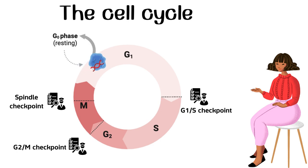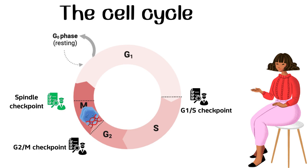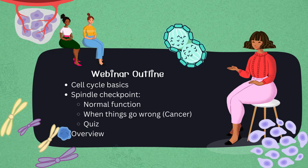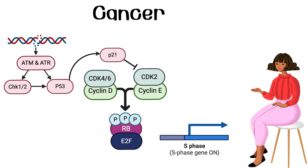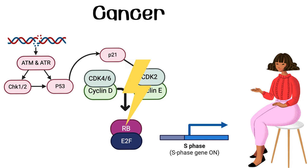Now that we have gone through the three main cell cycle checkpoints, we can see how vital these guardians are to ensuring precise and regulated cell division and to initiating corrective action or halting progression through the cell cycle when issues or damage are detected. At the G1/S phase, a cascade of events involving cyclin D, CDKs, and tumor suppressor proteins like RB and P53 orchestrate the transition to DNA synthesis while responding to DNA damage. Mutations disrupting these checkpoints, such as those seen in retinoblastoma, can lead to uncontrolled cell growth, which is a hallmark of cancer.